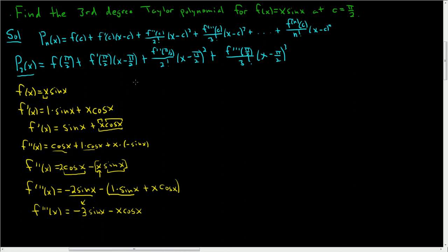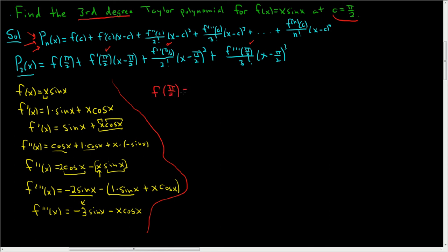To recap: we took three derivatives since we need the third degree polynomial. Now we evaluate f and all its derivatives at c equals pi over 2. Starting with f of pi over 2: that's pi over 2 times sine of pi over 2. Since sine of pi over 2 is 1, f of pi over 2 equals pi over 2.